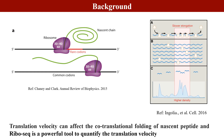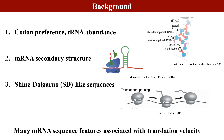Firstly, I would like to give a short introduction of the background. Translation velocity can affect the co-translational folding of the nascent peptide, and Ribo-Seq is a powerful tool to quantify the translation velocity. Previous studies illustrated that many mRNA sequence features are associated with translation velocity, such as codon preference, mRNA secondary structure, and SD-like sequences in the CDS region.